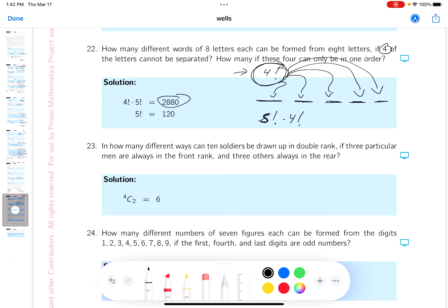How many of these, if four letters only can be in one order? Well, four letters are in one order. That's a given. That means four of those letters, there's only one arrangement there in a particular order. But there's still five places. So what's it going to be? Five factorial.